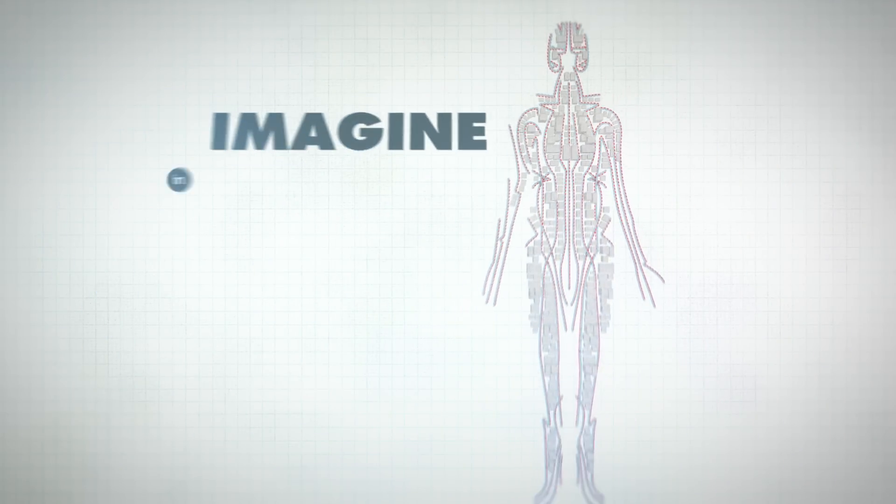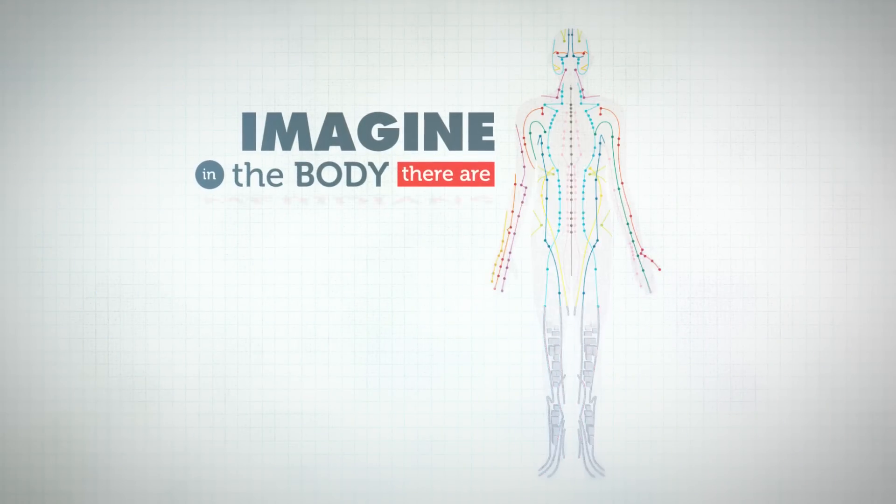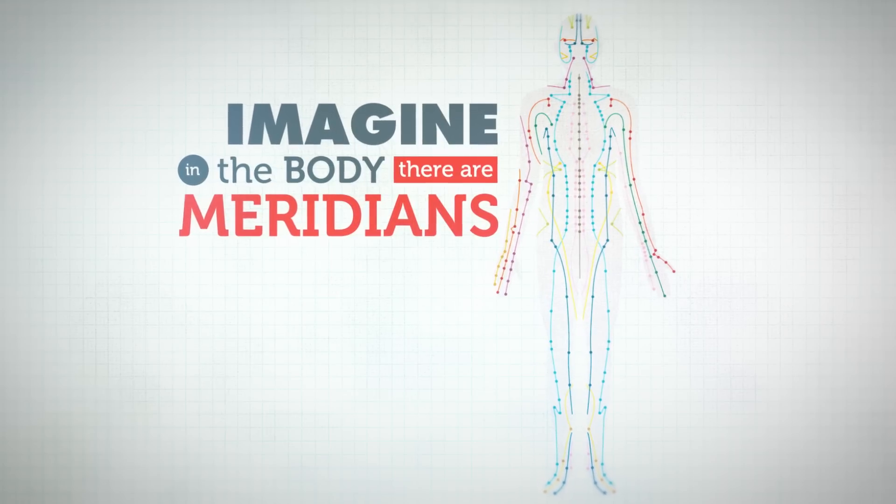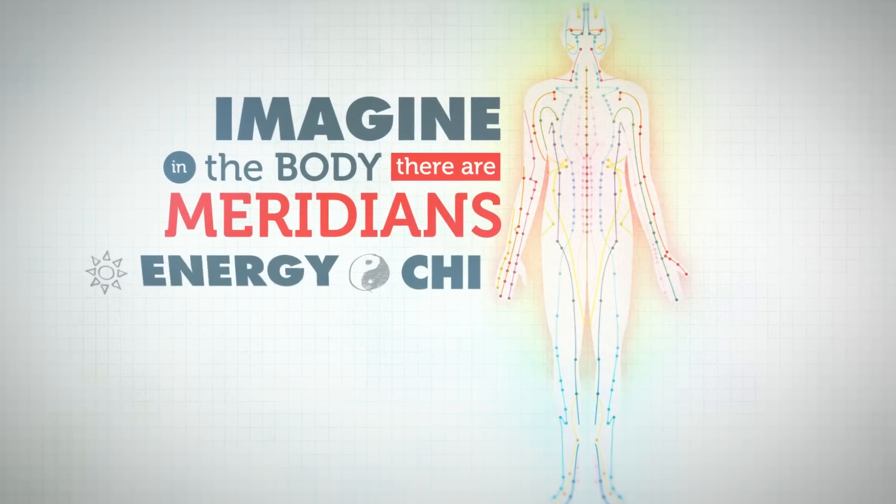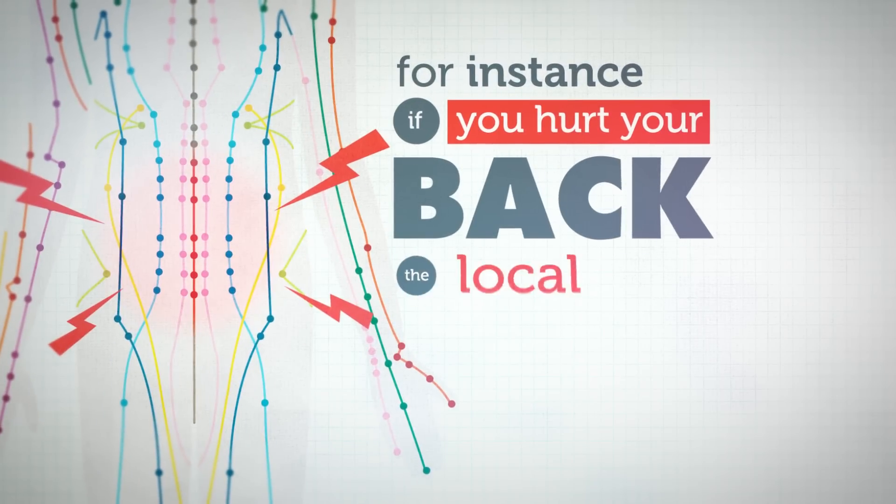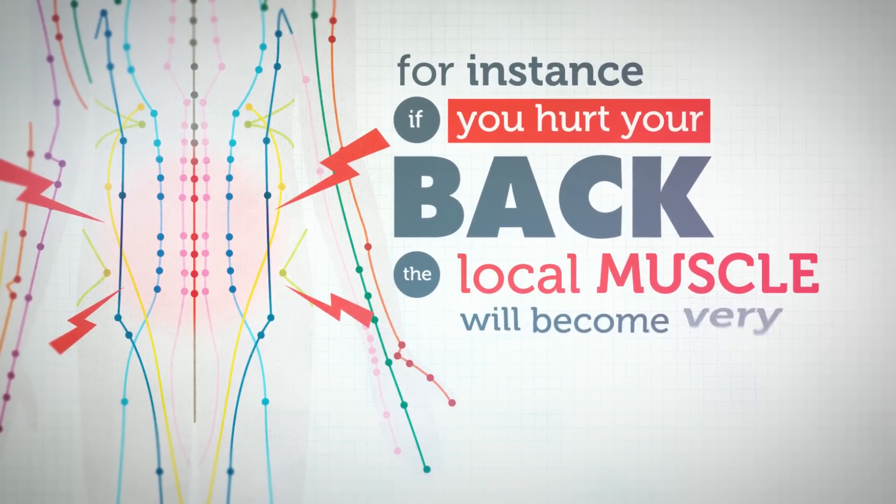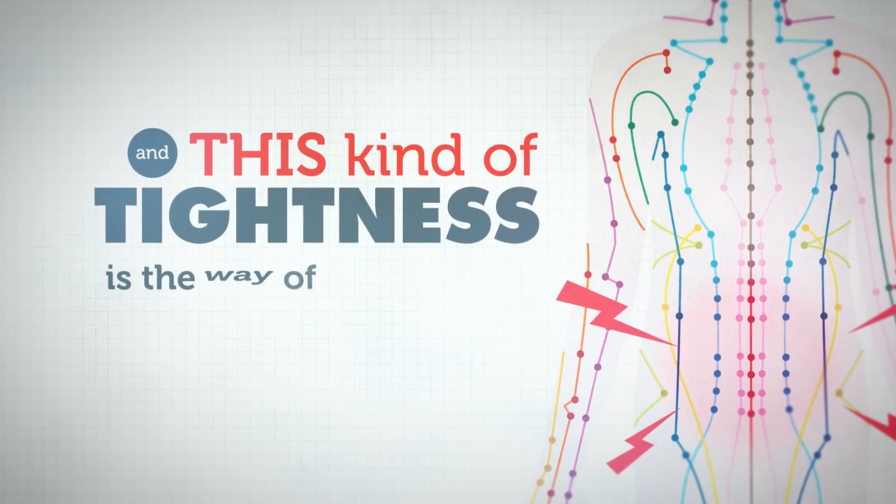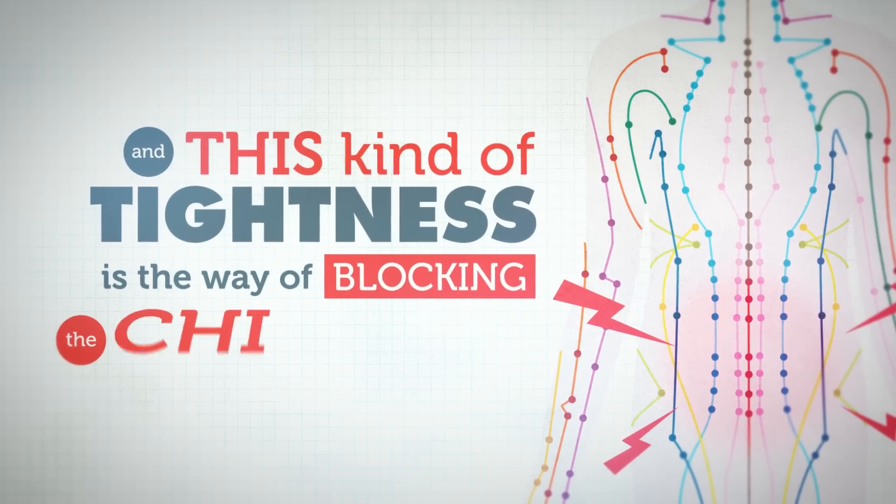In the body there are meridians, and in these meridians we have qi flow, energy flow. For instance, if you hurt your back, the local muscle will become very tight. This kind of tightness is a way of blocking the qi flow.